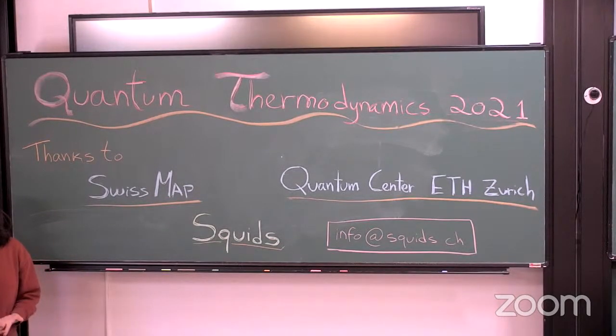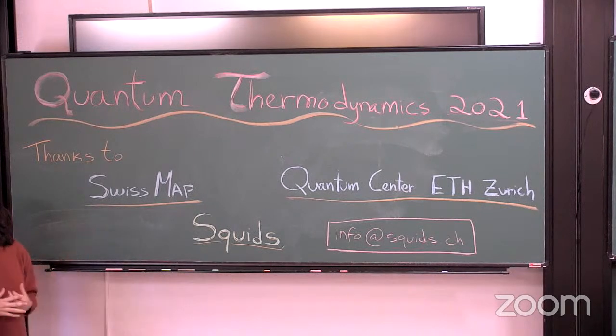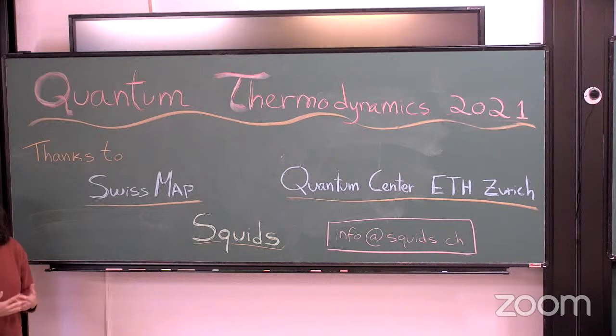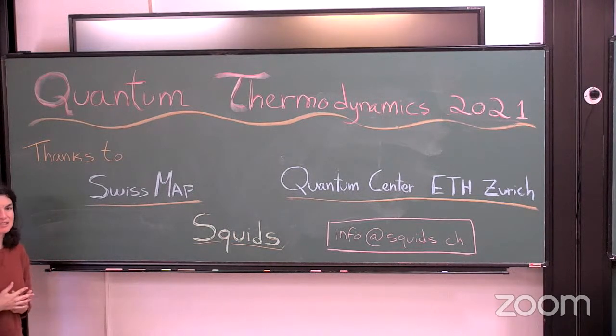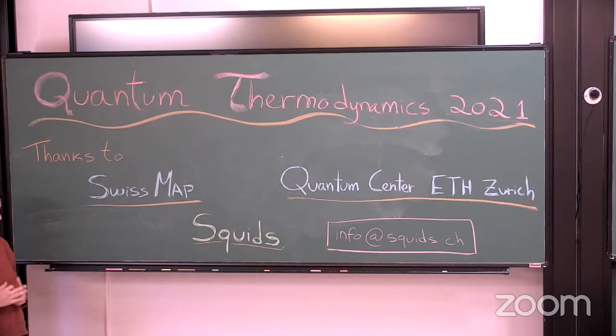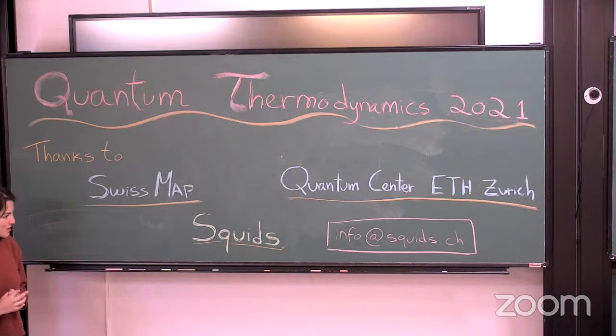Swiss MAP is a Switzerland-wide network of mathematical physics and they own this research station. They paid for the accommodation and meals of all the live participants, so everyone who's here in person can thank Swiss MAP for this. Without them this conference would really not be possible. In particular we'd like to thank Elise Rafael from Swiss MAP who's been our contact here and has been more than helpful with everything.